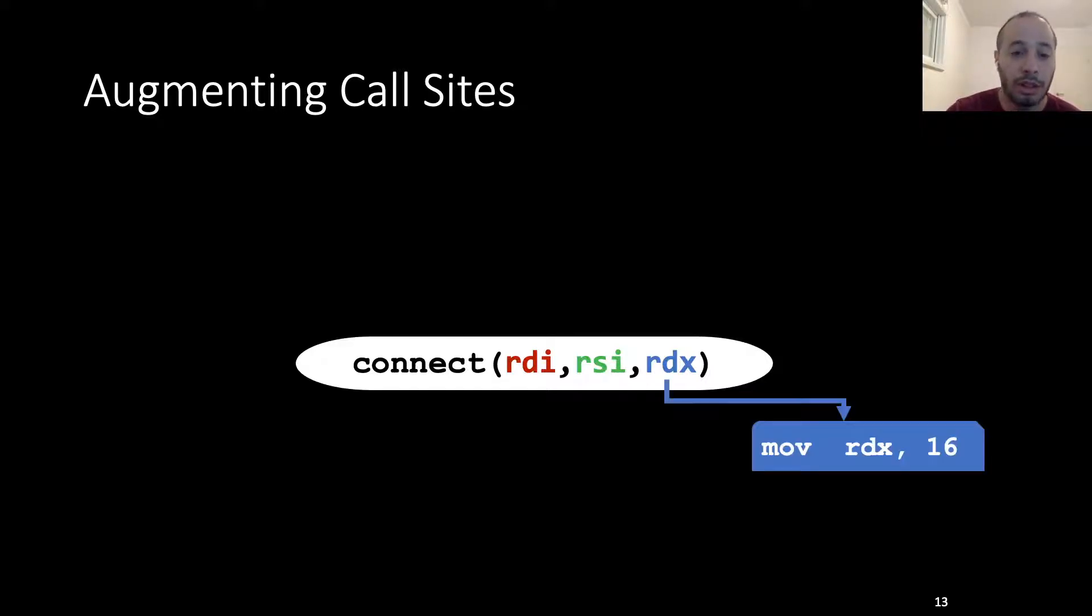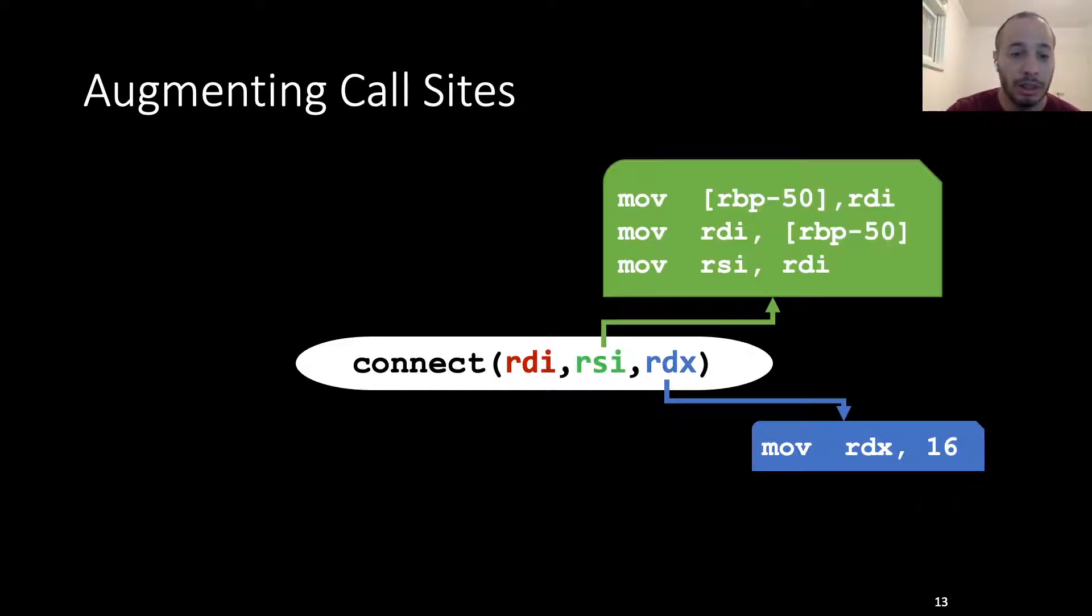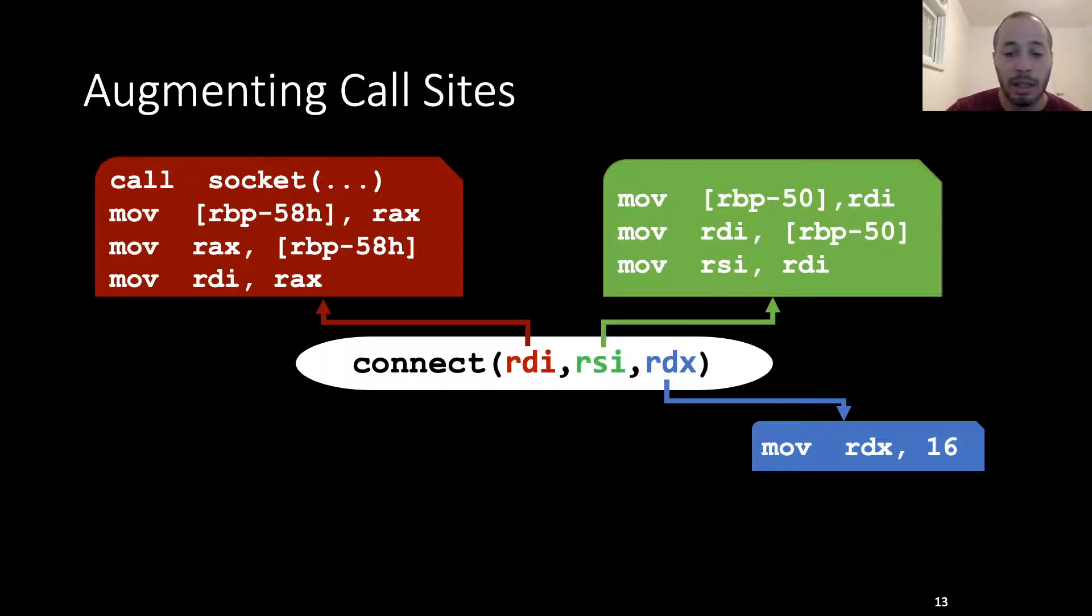For example, we see that RDX is a straightforward case of being assigned the concrete value 16 just before the call. But in these two other cases, a more complex set of instructions constructs the value.